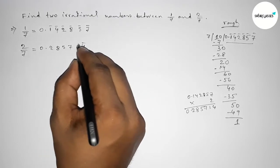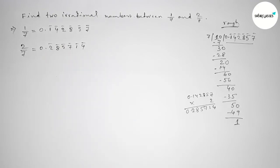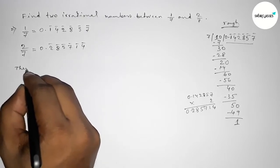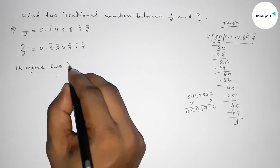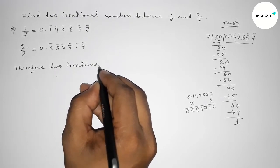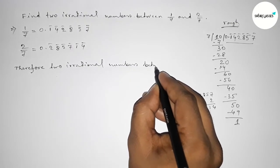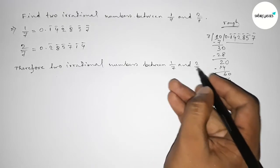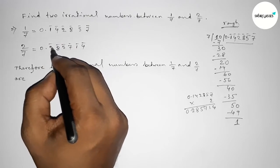Now between these two recurring decimals we can find infinite number of irrational numbers. So between 1/7 and 2/7 there are infinite number of irrational numbers, but we have to find only two irrational numbers.